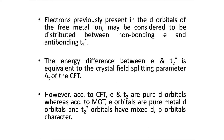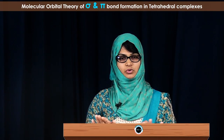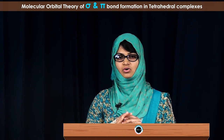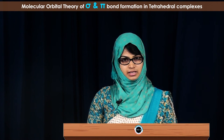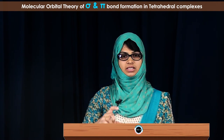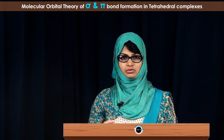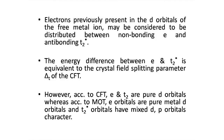The crystal field splitting here is E to T2*, and this splitting is very small. We can see from the energy level diagram that there is a very small gap between E and T2*. Therefore, most — in fact all — tetrahedral complexes are high spin complexes. The reason is that with such a little energy gap, electrons can easily jump from lower energy to higher energy level. This concludes the sigma bond formation in tetrahedral complexes.